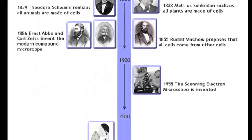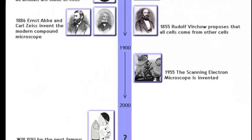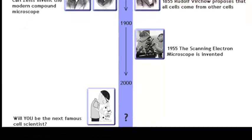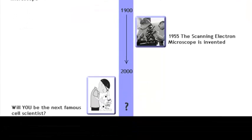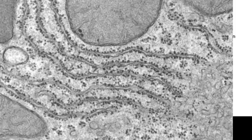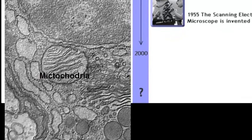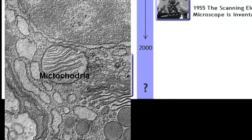Next is the development of the electron microscope in the 1950s. This microscope magnifies cells 100,000 times compared to the light microscope's 1,000 times. This advance allows the world to see the internal cell — the nucleus, the mitochondria, and other cell parts.